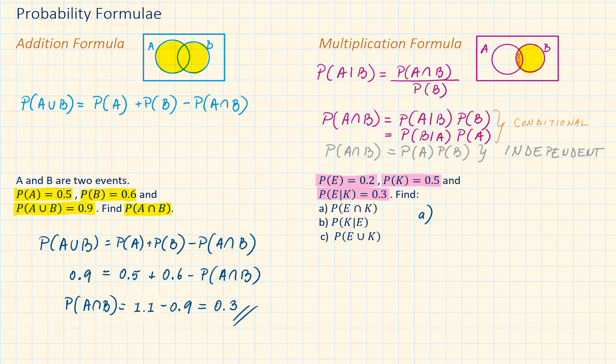Writing out the intersection formula, we will have probability of E intersection K is equal to probability of E given K has happened times the probability of K. Replacing the values, we will have 0.15.